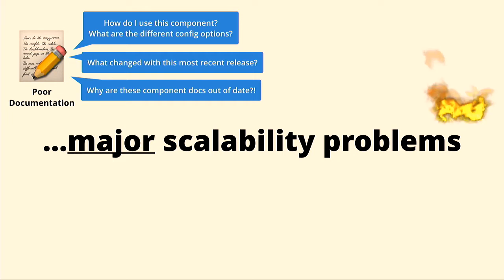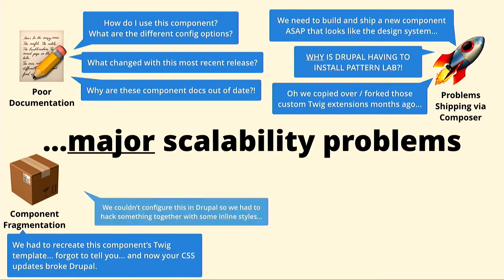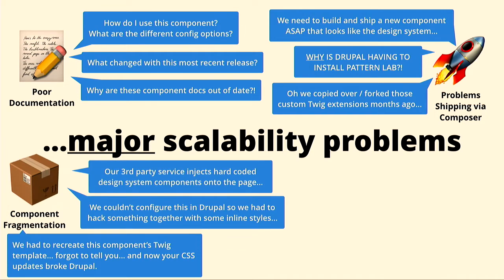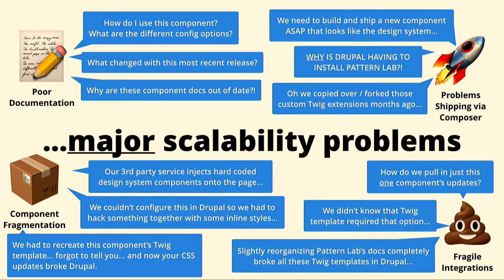We kept hitting issues related to component fragmentation. Once things were shipped and getting used outside of Drupal, components were getting hard-coded, hacked together, and forked without us even knowing about it. On top of all this, we had fragile integration issues. Sure, we were using the components module in Drupal, but if you changed a component's folder name in Pattern Lab — just renamed it to tidy up your code — things could unexpectedly break unbeknownst to you in Drupal.